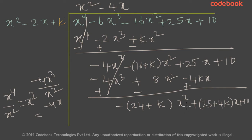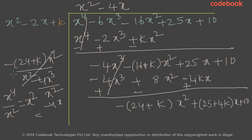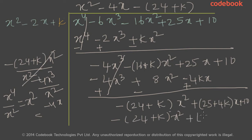The degree of the remainder here is 2 and the degree of the divisor is also 2, so we have to continue the division process. Divide the first term of the new dividend, minus (24 plus k)x squared, by the first term of the divisor, x squared. The x squared cancels and you get minus of (24 plus k). Multiplying through gives minus (24 plus k)x squared, plus (48 plus 2k)x, minus (24k plus k squared).